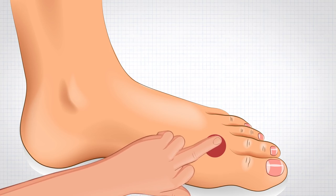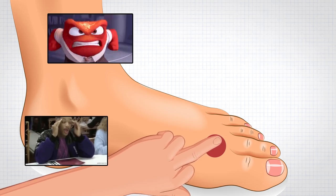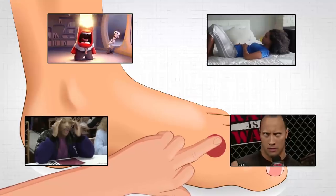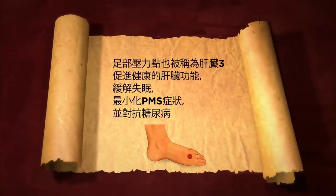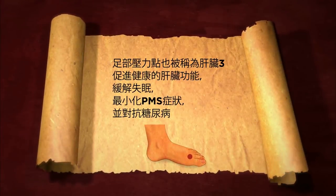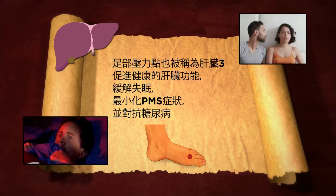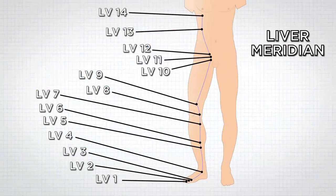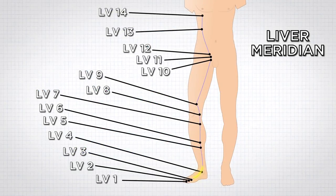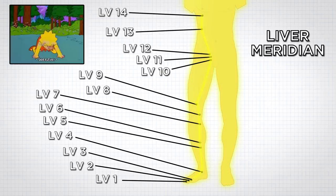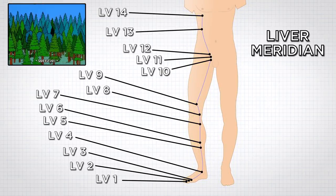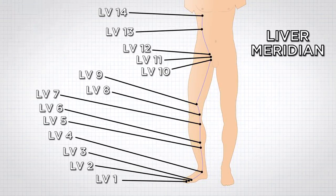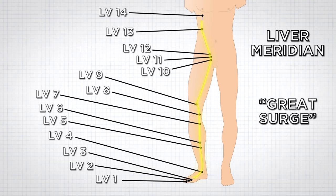In addition to its supposed calming powers used to relieve headaches, anger, digestive concerns, and eye-related issues, ancient Chinese texts state that this pressure point also promotes healthy liver functions, pacifies insomnia, minimizes PMS symptoms, and combats diabetes. According to ancient Chinese medicine, balancing the liver meridian clears the energy channels running up the body, relieving symptoms related to allergies and environmental toxins. This uplifting movement of chi from the feet to the rest of the body explains the name Great Surge.